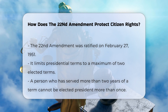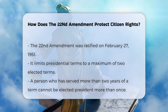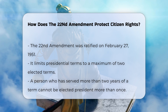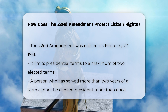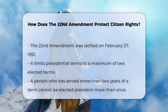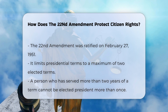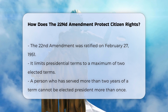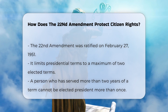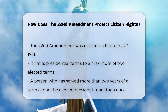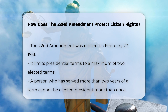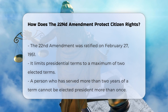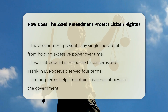Limiting presidential terms. The amendment explicitly states that no person shall be elected to the office of the president more than twice, and no person who has held the office of president or acted as president for more than two years of a term to which some other person was elected president shall be elected to the office of president more than once.